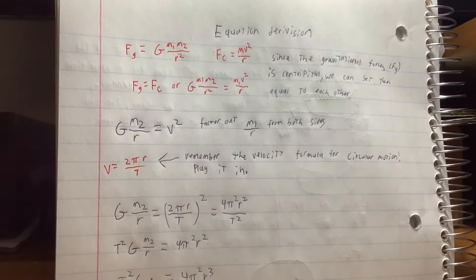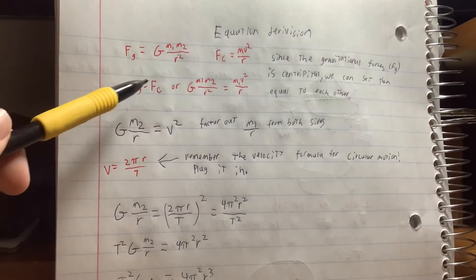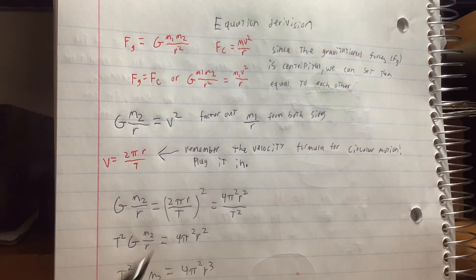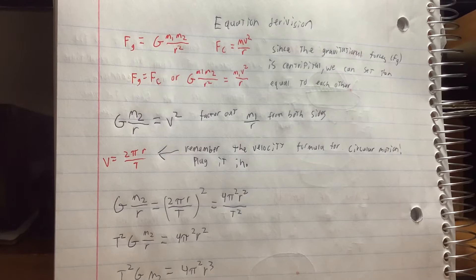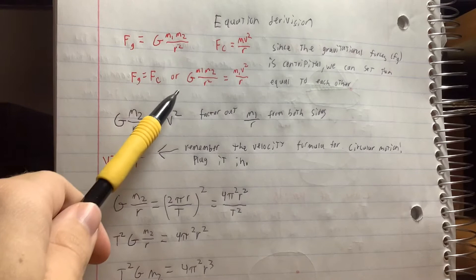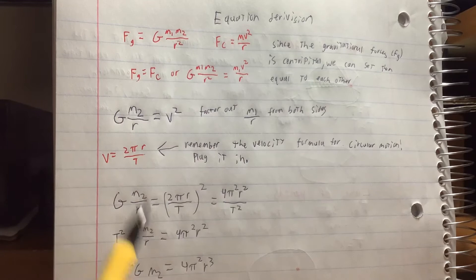Now to derive the equation for Kepler's third law of planetary motion. We'll start off with our gravity equation, g times m1 m2 over r squared, and then our centripetal force equation, mv squared over r. Since the gravitational force Fg is the centripetal force in this case, because gravity holds planets in their orbit, we can set them equal to each other. So Fg equals Fc or g m1 times m2 over r squared equals m1 v squared over r. If we factor out m over r from both sides we'll get g times m over r equals v squared.